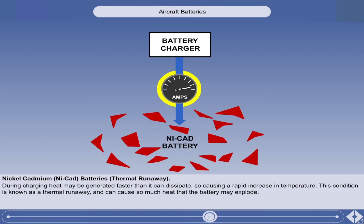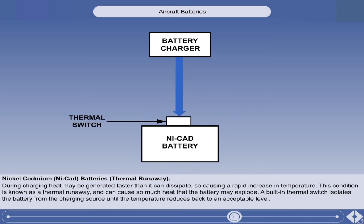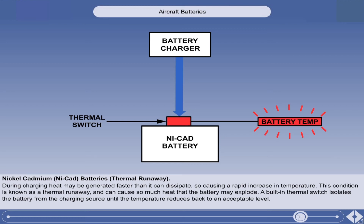For this reason, the charging of a NICAD battery must be closely monitored. A built-in thermal switch monitors the battery temperature, and operates at a pre-set temperature, isolating the battery from the charging source until the temperature reduces back to an acceptable level. There may be an indicator light on the flight deck to alert the pilot when the temperature switch operates.